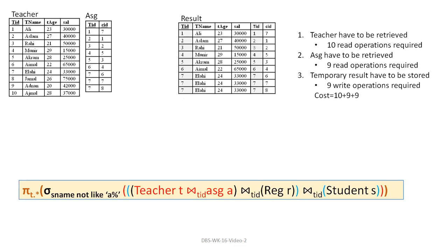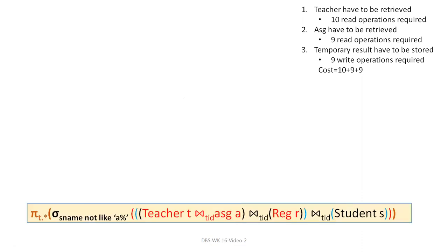This intermediate result must be written — 9 write operations required. So total cost so far: 10 reads for Teacher + 9 reads for ASG + 9 writes for temporary result storage.